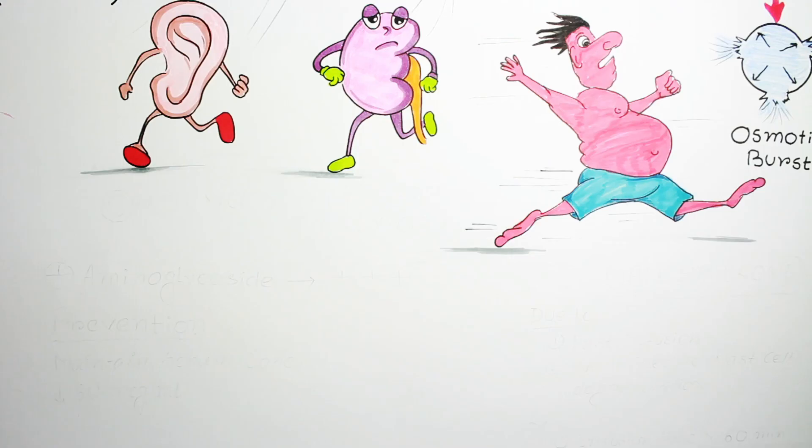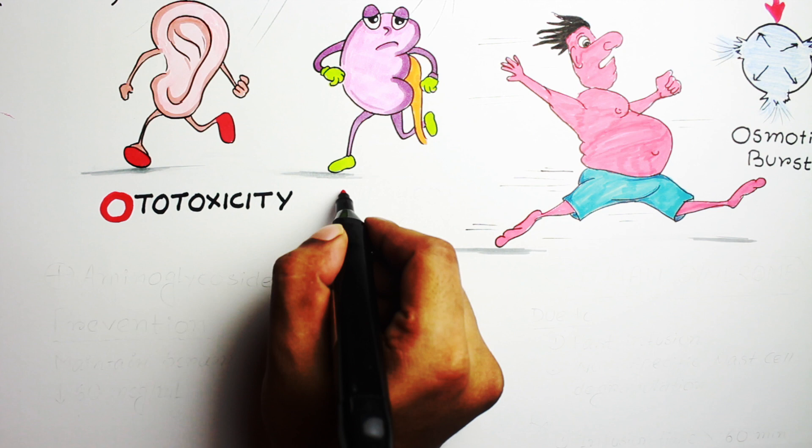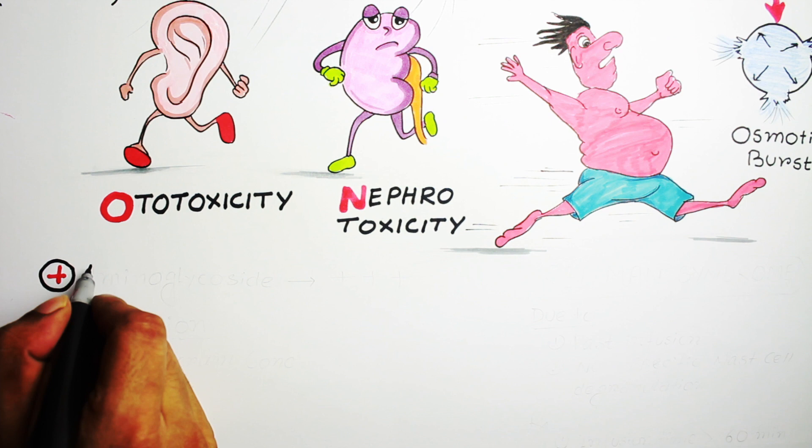This situation can be worse if it is administered with another ototoxic or nephrotoxic drug like aminoglycosides. But this nephrotoxicity and ototoxicity can be prevented by maintaining serum concentration less than 60 micrograms per ml.